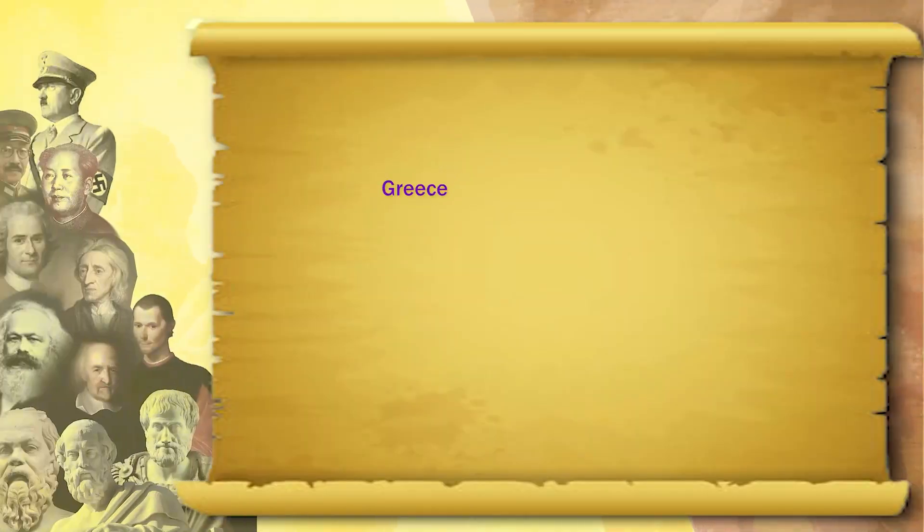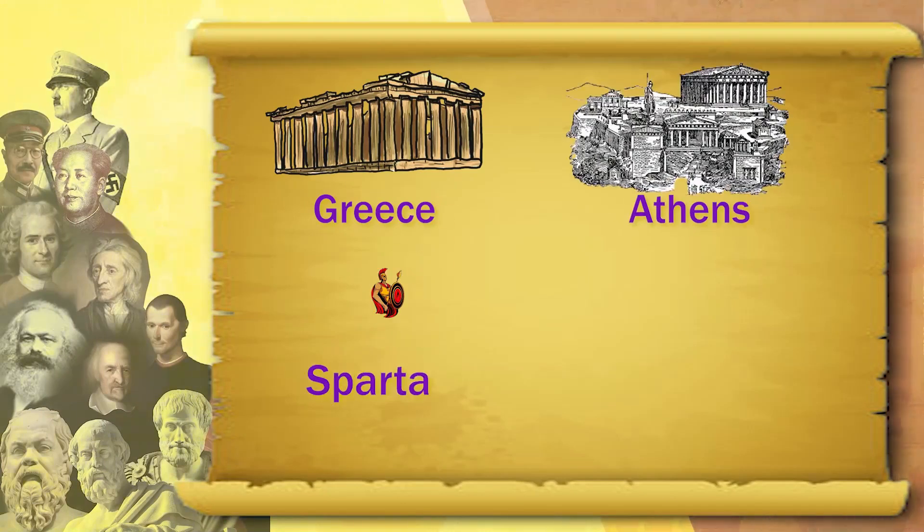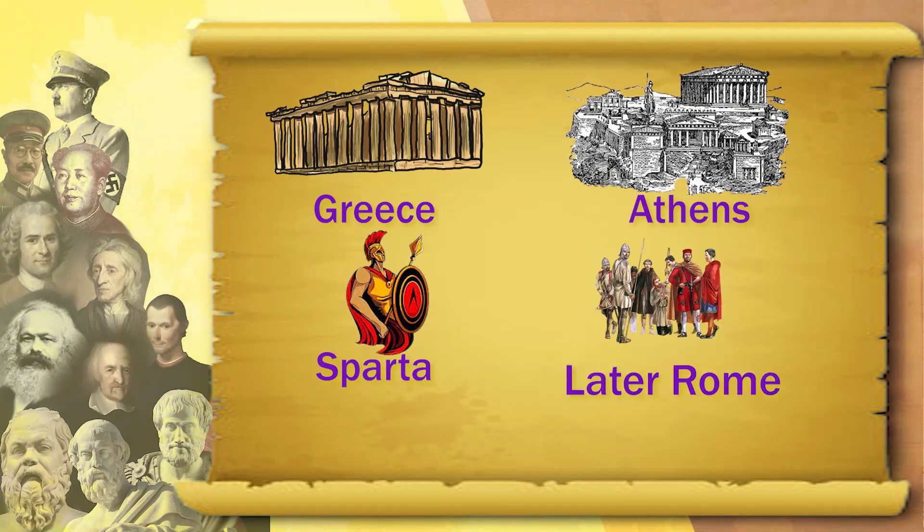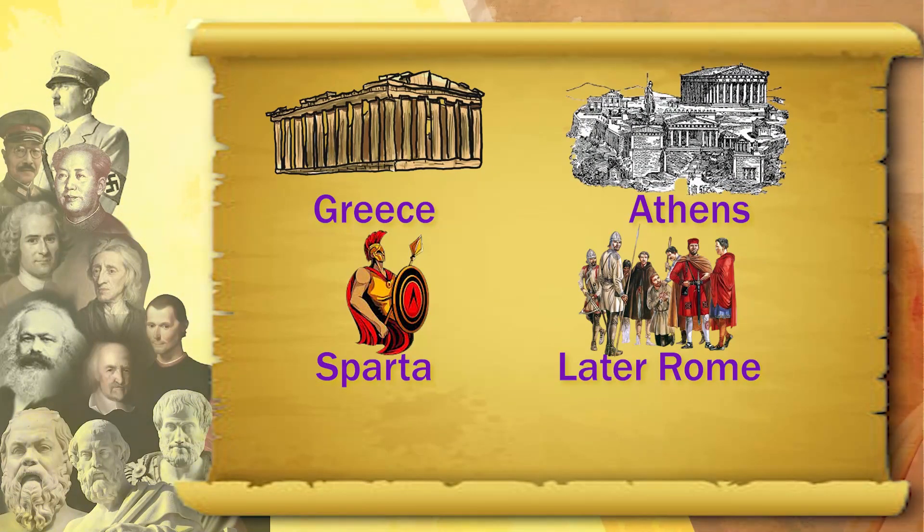We must understand that today when we speak of the separation of church and state — what is the European concept of secularism, what is the European concept of democracy — all these things have their seeds in the hallowed antiquity and the hoary past of ancient Europe, particularly Greece, Athens, Sparta, and then later Rome.